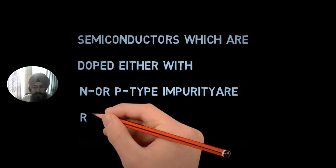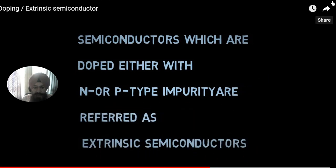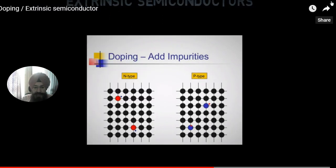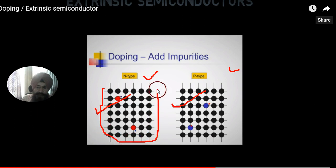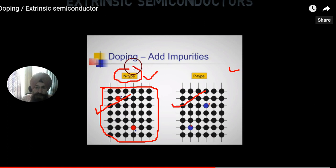Semiconductors doped either with N-type or P-type impurities are called extrinsic semiconductors. In N-type, the number of electrons is very large. In P-type, the number of holes is very large. One very important point: N-type has a very large number of electrons due to donor impurity atoms.